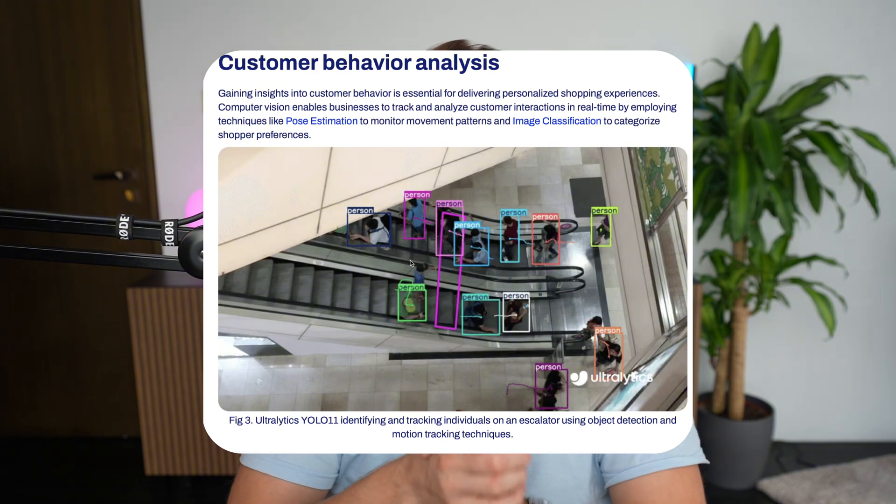Customer behavior analysis in general is also valuable — you can track how many people are going in and out of your store, how they're moving around, and generate a heat map. You just need a few cameras. One of the main limitations of having these retail analysis systems is that you often rent your shop space, making it hard to set up full camera and hardware systems.